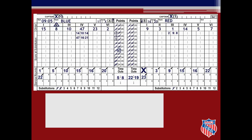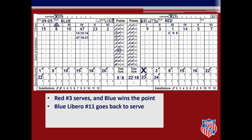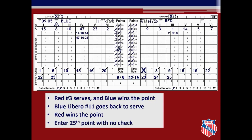Red number 3 goes back to serve as the correct server — check the service rounds box. The serve goes into the net and blue is awarded the ball; enter the exit score of 24 and slash the 23rd point in the blue points column. Blue libero number 11 is going back to the service position. Since there is a triangle around the roman numeral for this position, it is legal for number 11 to serve. Libero number 11 serves the ball, and after a long rally, red wins the point. Record the exit score of 23 in the checked service rounds box and slash point 25 in red's points column. Since red won the set on a serve by the opponent, no check mark is entered in the next service rounds box for red number 1 — only enter the exit score of 24 in that box. Red wins the first set of the match 25 to 23.